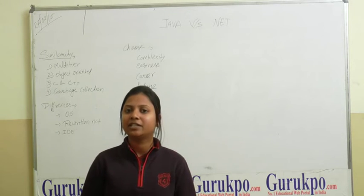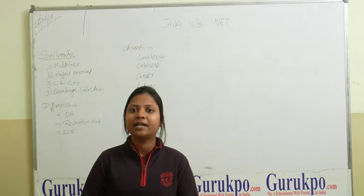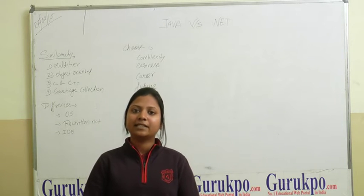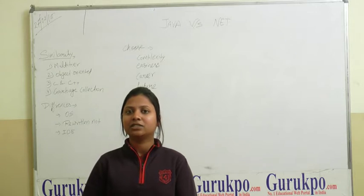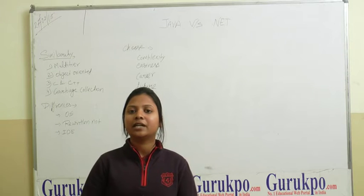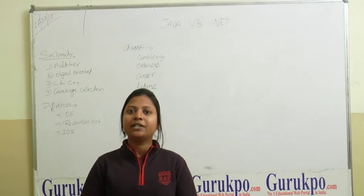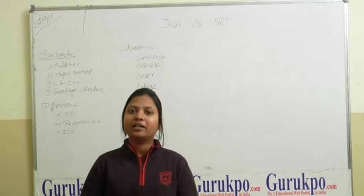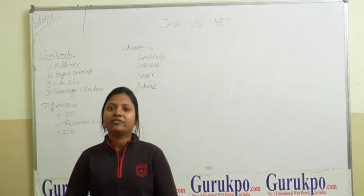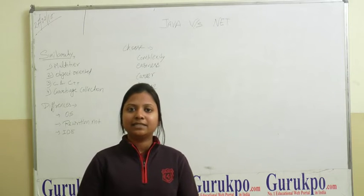The similarities between these two languages are that both support multi-tiered applications. When we talk about 3-tiered applications, one tier is the client side, another tier is the server side, and the mediator tier is the database tier, meaning all the data in your database can be backed up and recovered for future use. Both languages also provide the facility to build multi-tiered applications. Another similarity is that both are object-oriented languages derived from the basic ideas of C and C++.